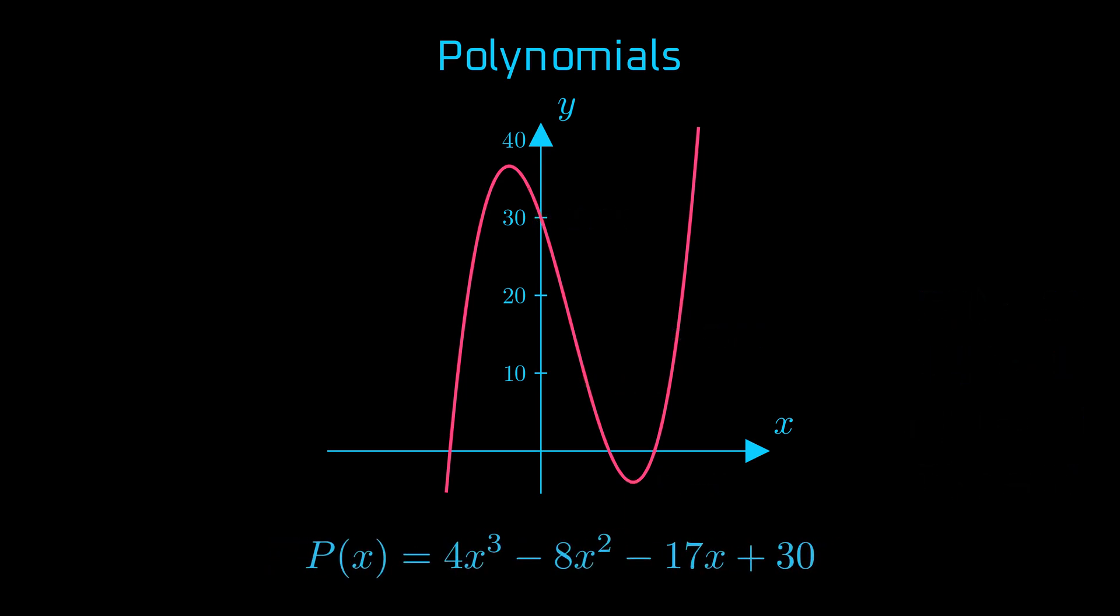Another way to represent a polynomial is by expressing it in terms of its roots, the values of x where the polynomial evaluates to 0. For example, if p of x has roots at 1.5, 2.5, and negative 2, it can be written with this factored form. Note that a polynomial of a given degree n can be rewritten with n roots and a lead coefficient.